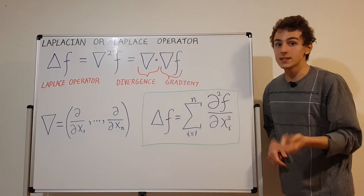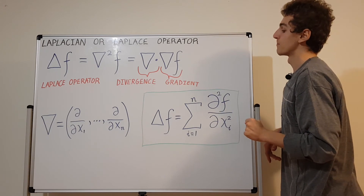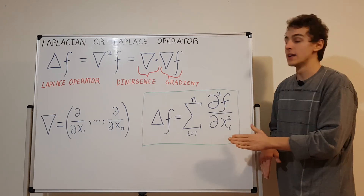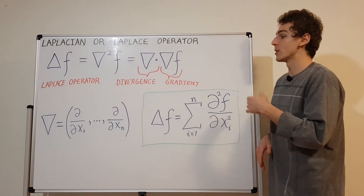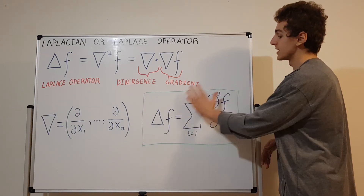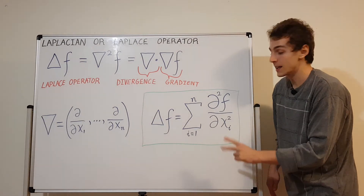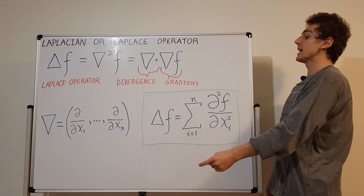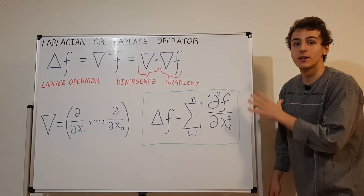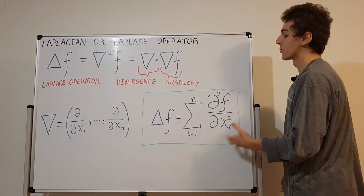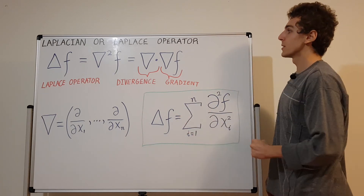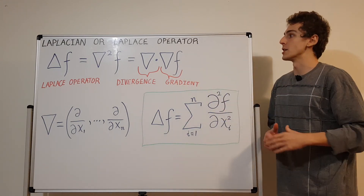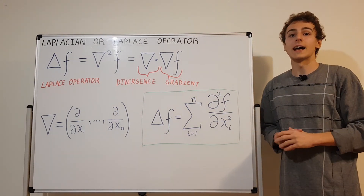Remember, F must be twice differentiable and real-valued. All of this is in Cartesian coordinates: in two dimensions that's x, y, giving two terms in the sum — the second derivative with respect to x and with respect to y. In three dimensions, you add a third term for the second derivative with respect to z. The Laplace operator, also known as the Laplacian.